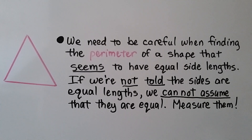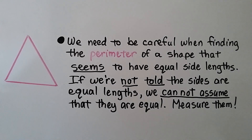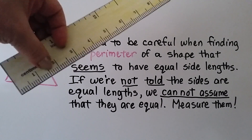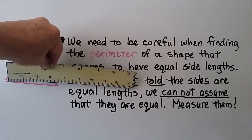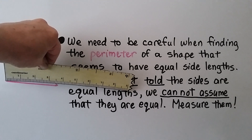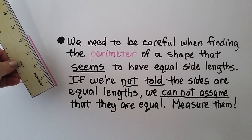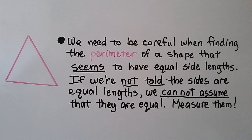We need to be careful when finding the perimeter of a shape that seems to have equal side lengths. If we're not told the sides are equal lengths, we cannot assume that they are — we need to measure them. If we measured the sides of this triangle, we can see this side is about 4 centimeters, and this side is also about 4 centimeters, but the bottom side is not 4 centimeters. So all the sides are not equal, even though it looks like they might be. If we're not told the sides are equal, we need to measure them.